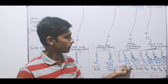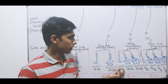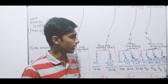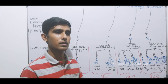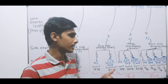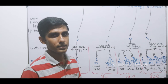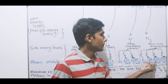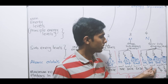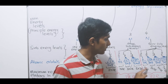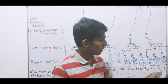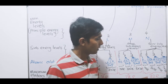The third main energy level has s, p, and d sub levels — one s orbital, three p orbitals, and five d orbitals — giving 2 + 6 + 10 = 18 electrons. This is different from what you learned at O-levels, where you only covered the first 20 elements. The capacity of the third main energy level is 18 electrons. The fourth main energy level has four sub levels: s, p, d, f — giving 2 + 6 + 10 + 14 = 32 electrons.